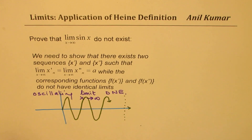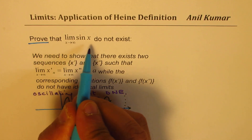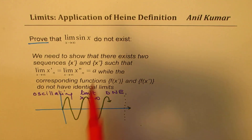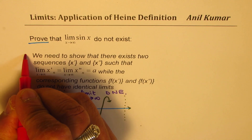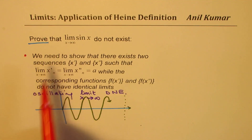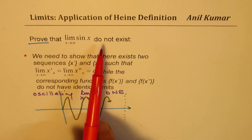Now the question is to prove — we need to formally prove that this limit does not exist. How will you prove it? You can pause the video, answer this question, and then look into my suggestions. To prove this, I'm going to take help of Heine's definition. Let's understand the definition first and then we'll apply it to prove.